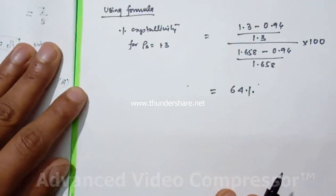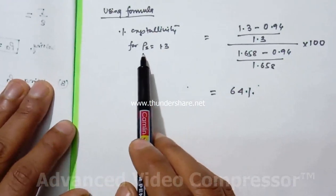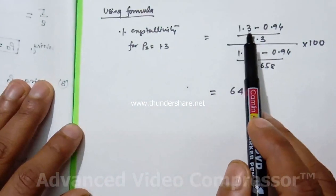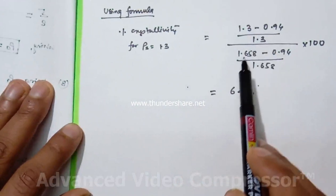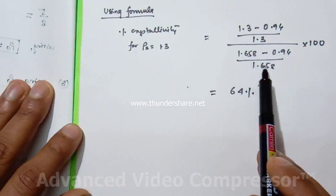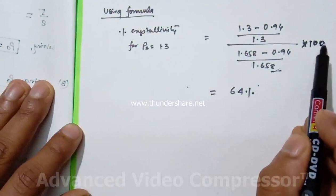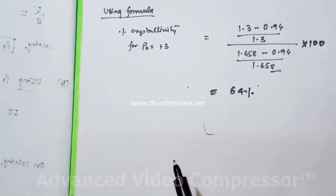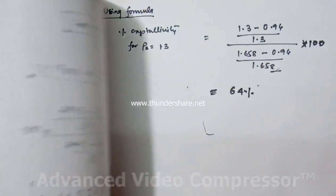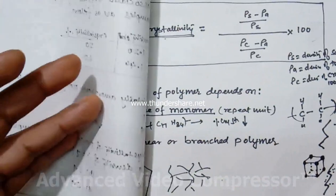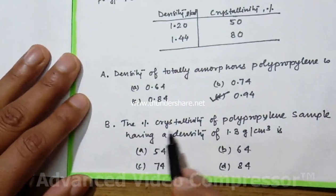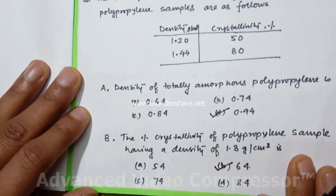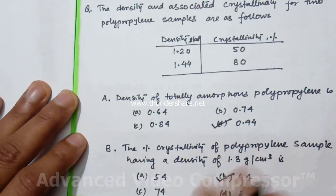Next task is to use this rho C in the formula. Percentage crystallinity for rho s equals 1.3: 1.3 minus 0.94 divided by 1.3, times 1.658 divided by 1.658 minus 0.94 times 100. This comes around 64%. The answer for the second part is 64%. Hope you have understood crystallinity. Thank you.